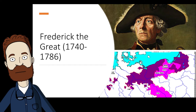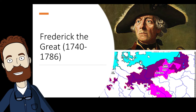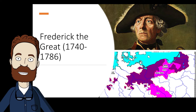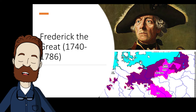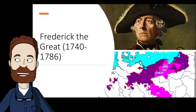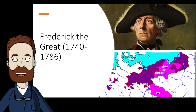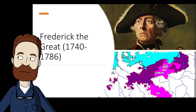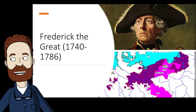Frederick the Great was the third king of Prussia, and he ranks amongst one of the most dominant figures in the history of modern Germany. It's under his leadership that Prussia became one of the greater states of Europe — he increased its territories and military strength to striking effect. From early in his reign, Frederick achieved a high reputation as a military commander, and the Prussian army rapidly became a model admired and imitated in many other states. He also emerged quickly as a leading exponent of the ideas of enlightened government.